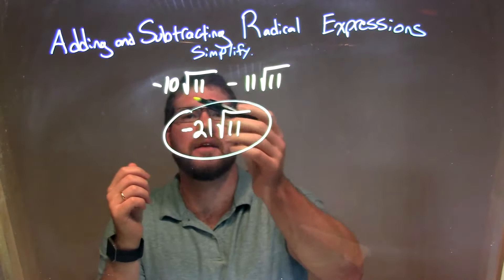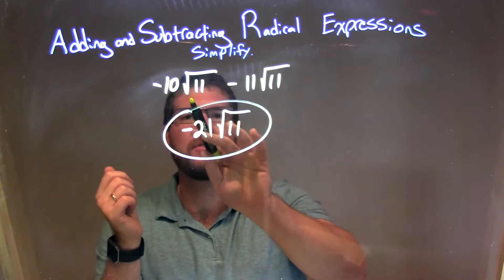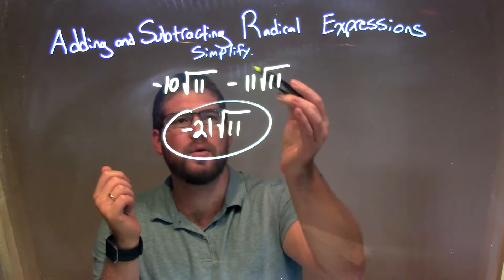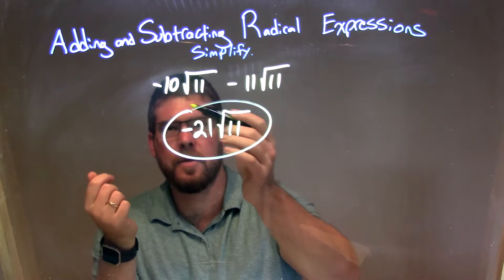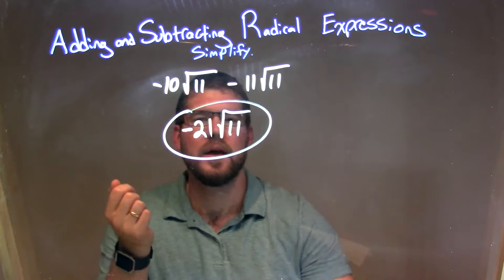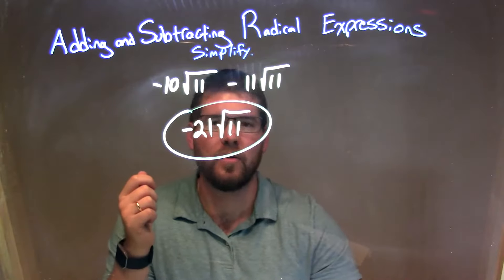So let's recap. We're given negative 10 times the square root of 11 minus 11 times the square root of 11. Since there's the same square root here of 11 to both parts, we look to what's in front of the square root of 11, and we combine those. Negative 10 minus 11 is a negative 21. We then bring down the square root of 11 to give us, again, our final answer here of negative 21 times the square root of 11.